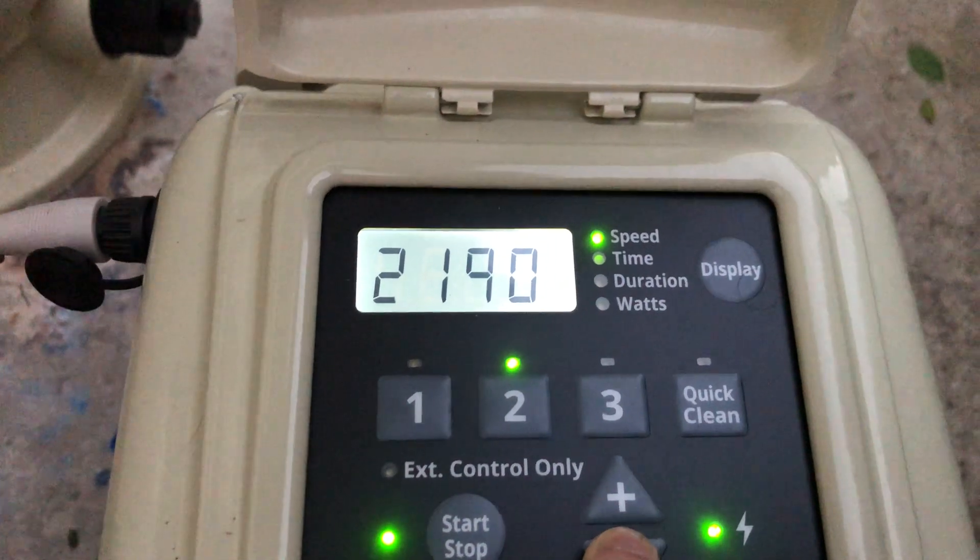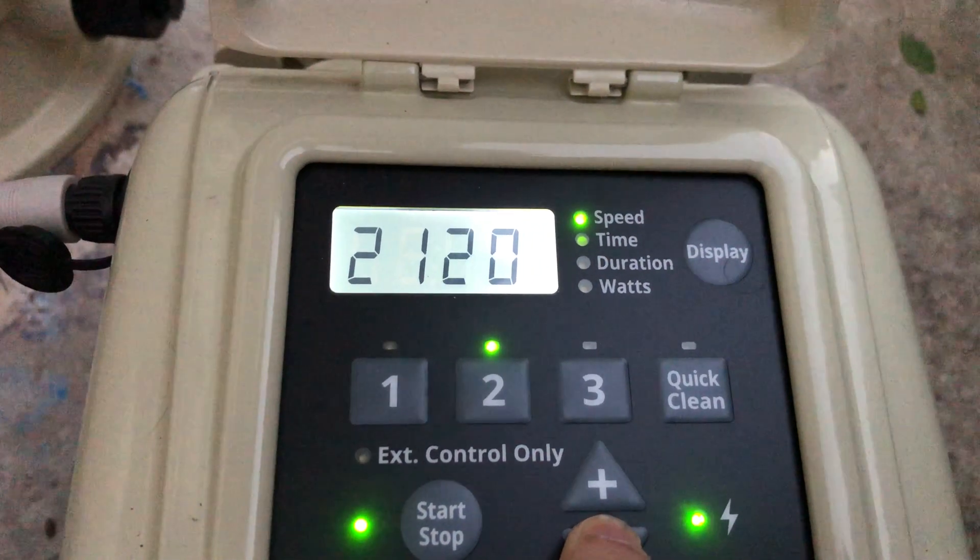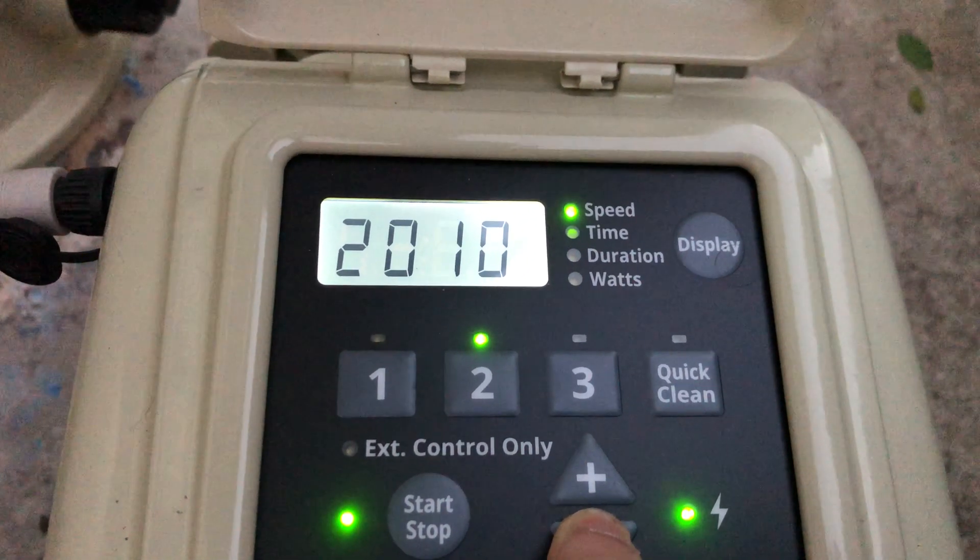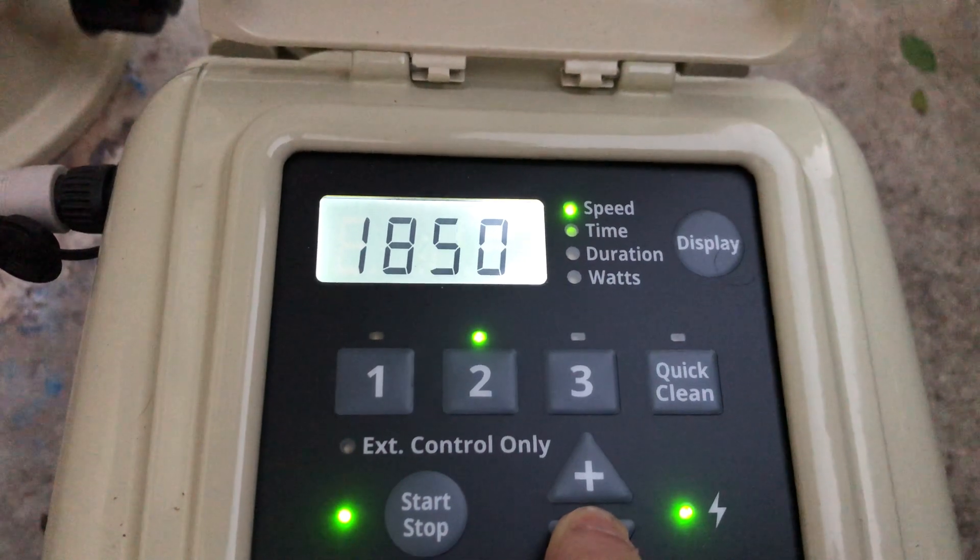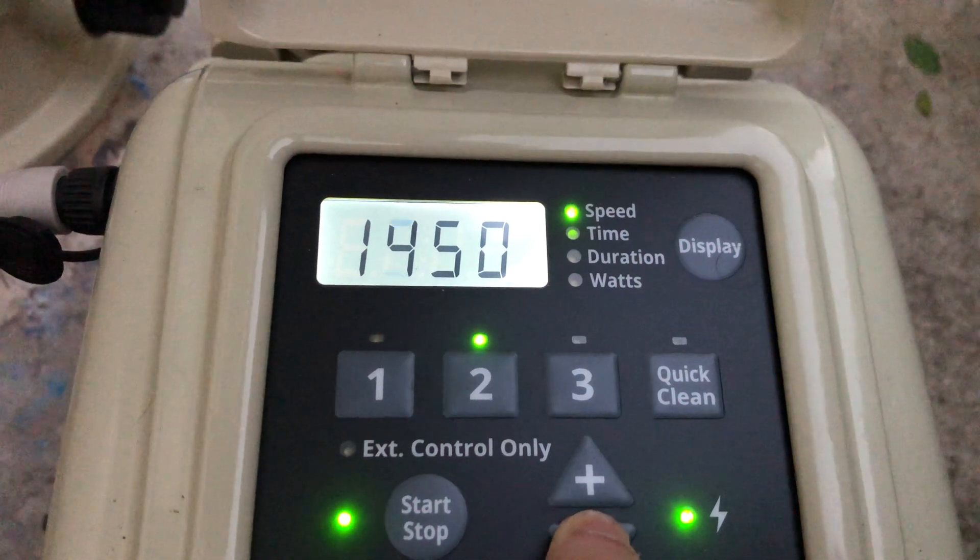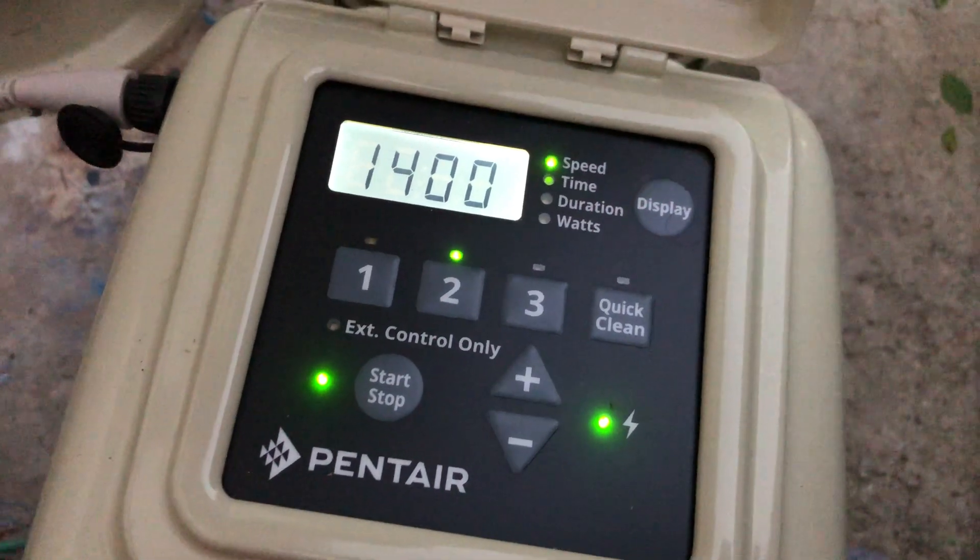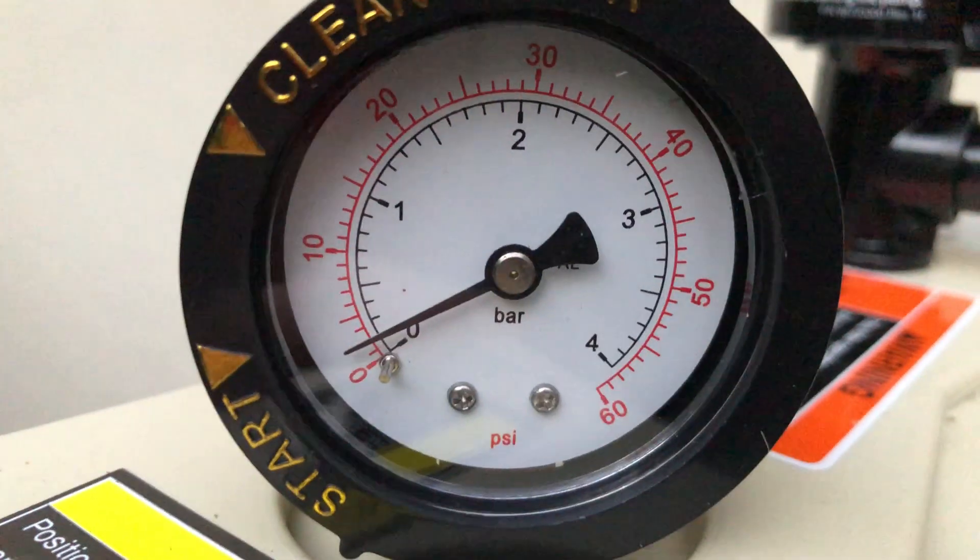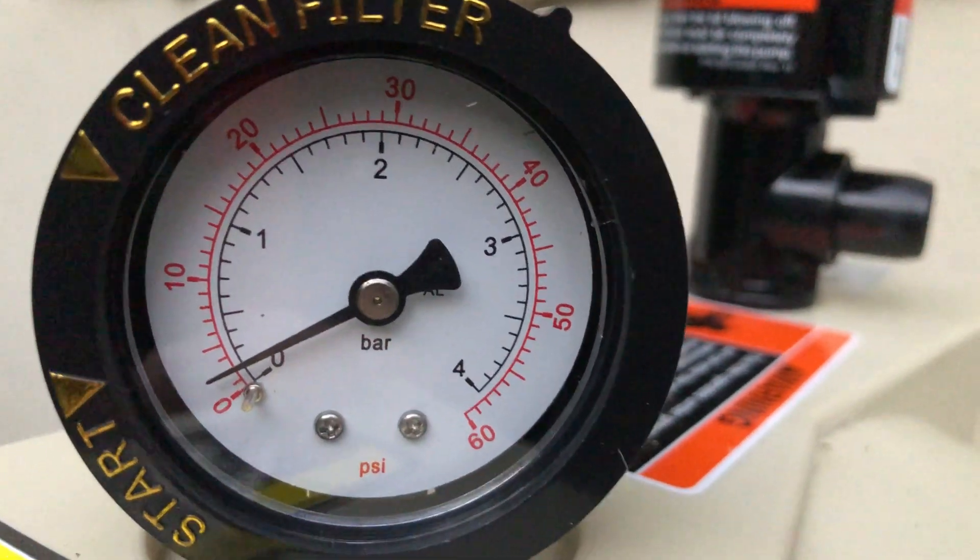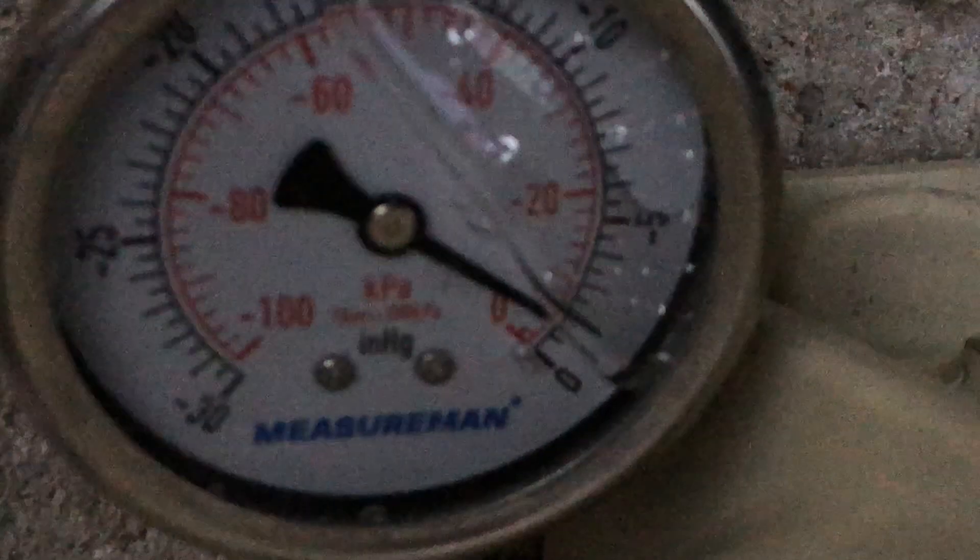Now for the last curve let's bring it down to 1,400. And now at 1,400 RPM let's see where we're at. So about 2 bars of pressure. I'll say about 2 bars of vacuum as well.